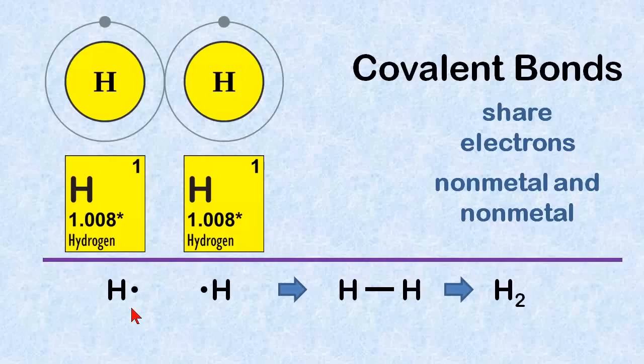The easiest covalent bond to ever think of is the molecule hydrogen. We're going to combine one hydrogen atom with another hydrogen atom. Their Lewis dot diagrams look like this, just one electron, one electron, forms a shared electron. This long line forms the H2 diatomic molecule.